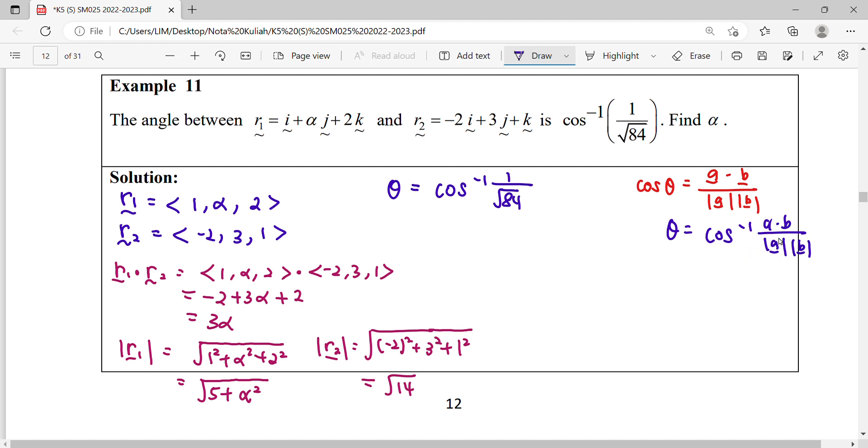Indirectly that means a dot b from here will be represented by your r1 dot r2 over magnitude r1 magnitude r2 will be equal to 1 over square root 84. So if you move your cos back, cos theta equals to this value, so this value will be equal to 1 over square root 84.